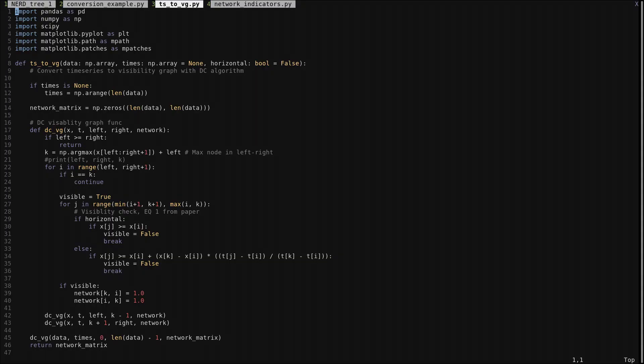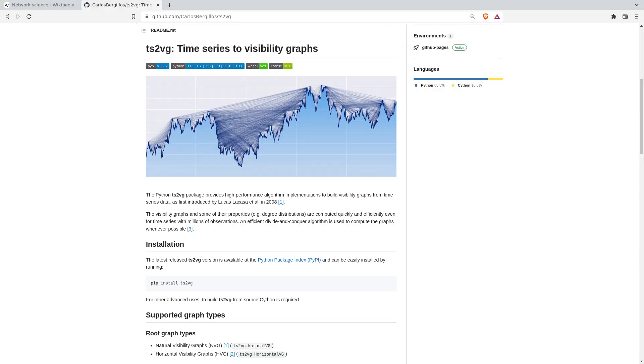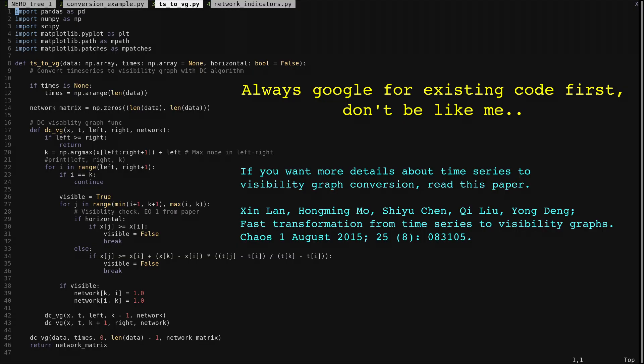I wrote the code to convert a time series to a visibility graph, and I was planning on going over it for the video. But after I wrote the code, I noticed there was an already existing Python module to do it called TS2VG. My code to do the conversion is still on GitHub, and it may be more readable than the code in the Python module, if you're curious.